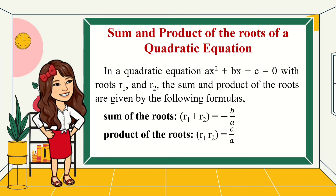For the sum of the roots, we have r sub 1 plus r sub 2 is equal to negative b over a. For the product of the roots, r sub 1 times r sub 2 is equal to c over a. So the values of a, b, and c are very important in getting the sum and the product of the roots given its equation.